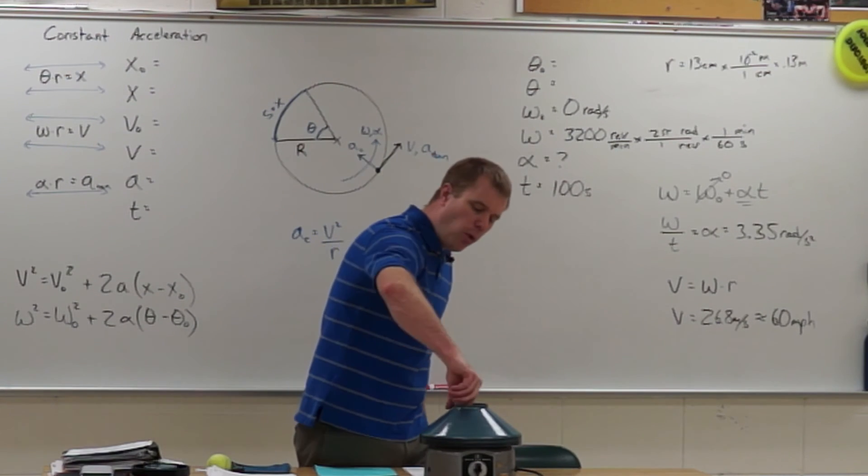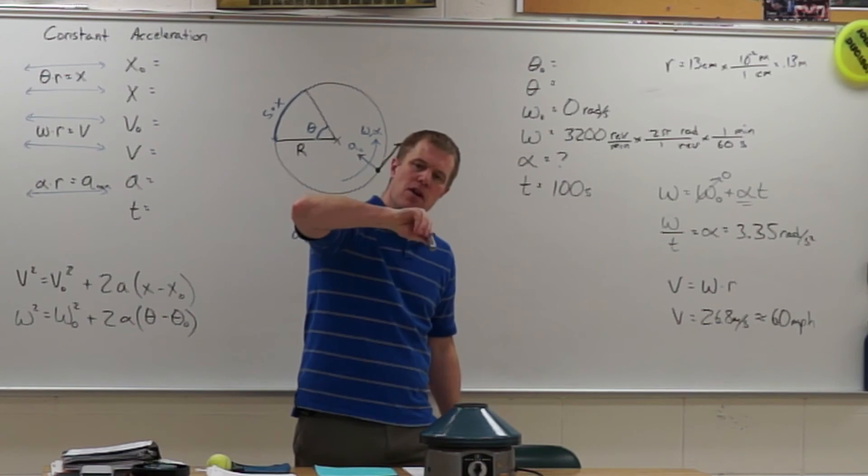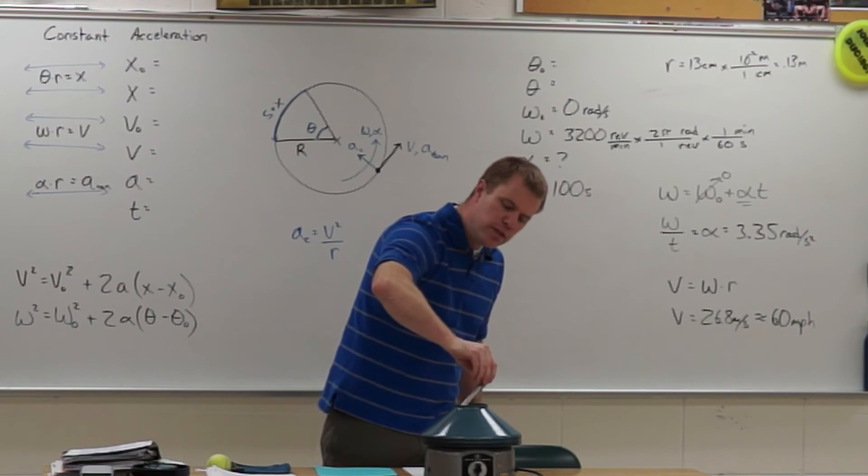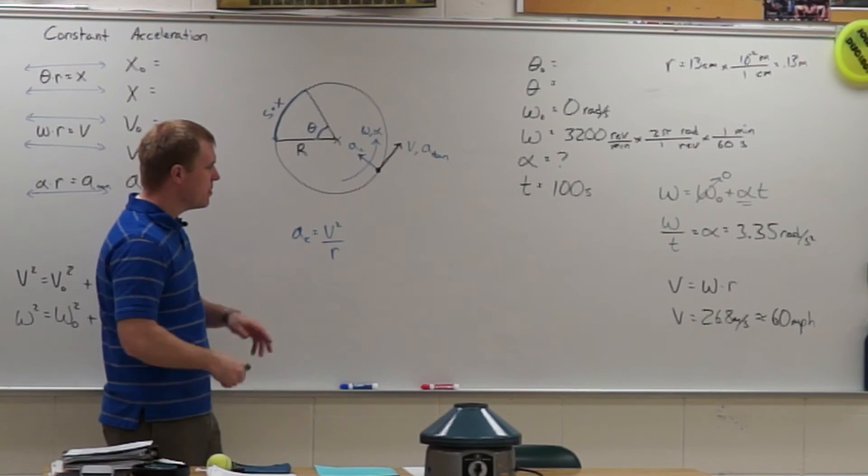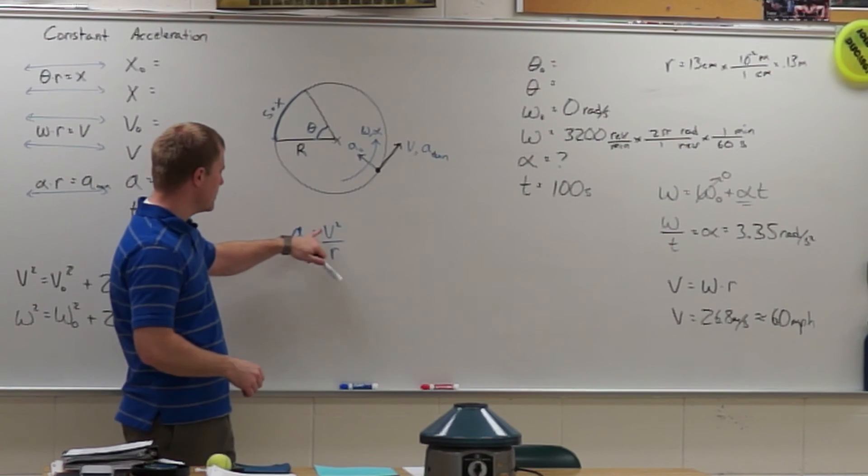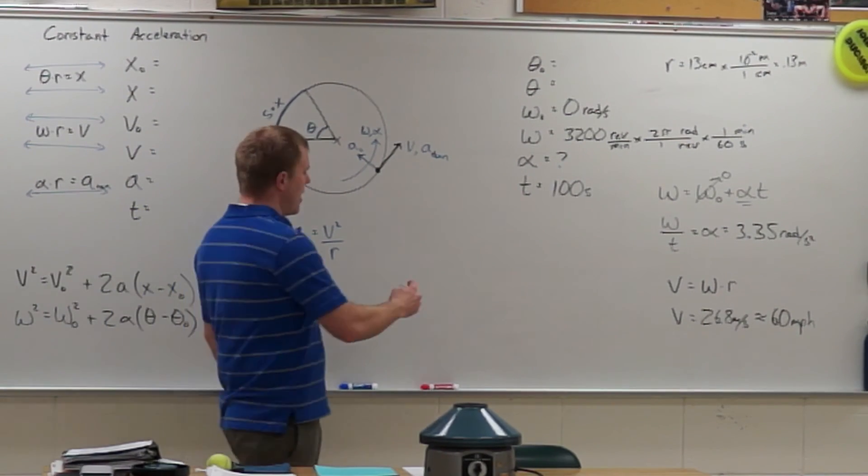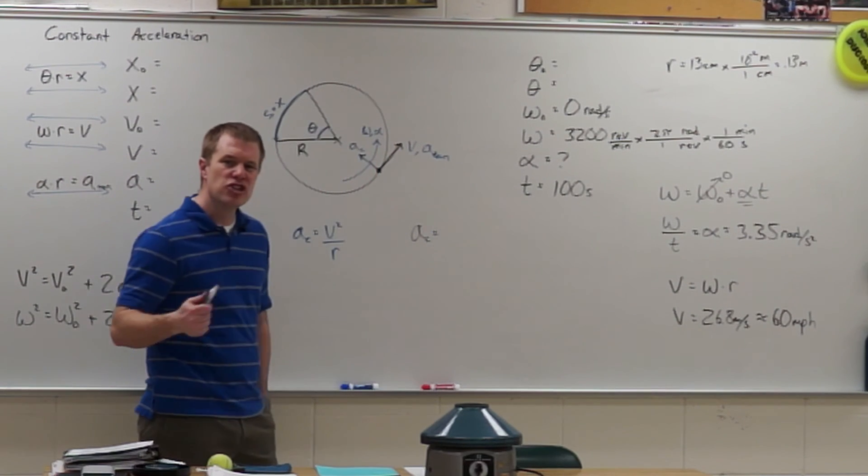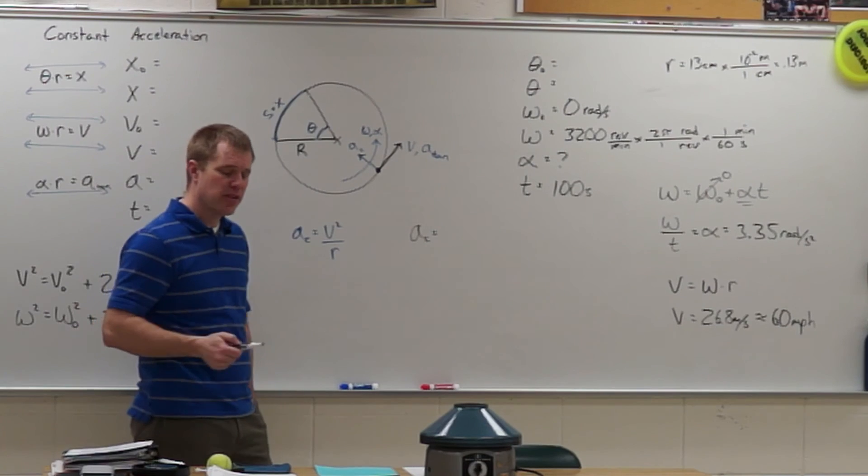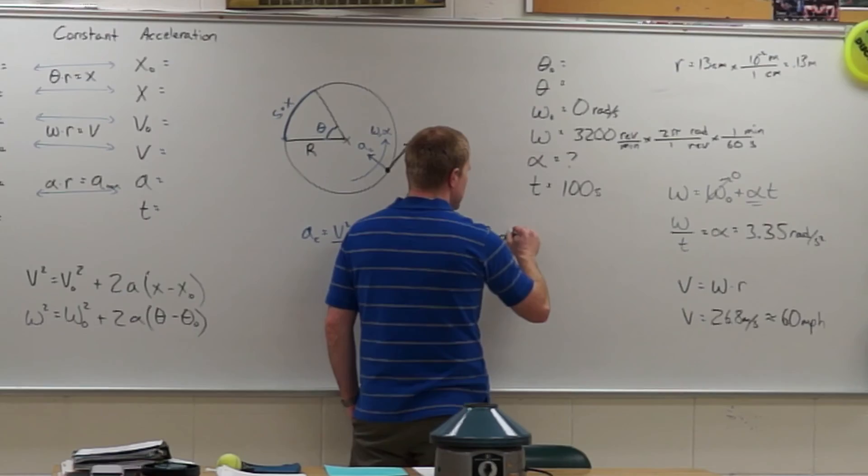So I have the end point out here going 60 miles an hour. What is the centripetal acceleration on it? How many g's is it pulling? Well, in order to find centripetal acceleration, I'm going to square my velocity, divide it by the radius. And when I do that, I find out that my centripetal acceleration in g's, so I have to divide by 9.8 to figure out the number of g's, comes out to 917 g's.